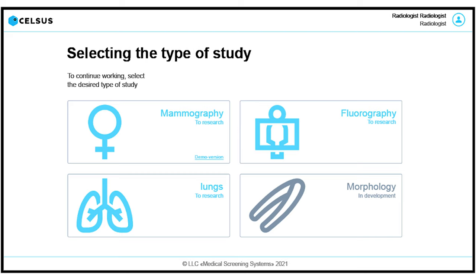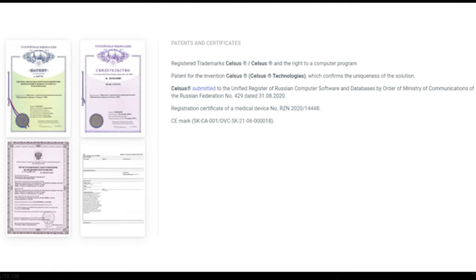Celsus already has ready-made integrations with many major manufacturers of PACS and RIS systems. The processing time of one X-ray or fluorography study is less than eight seconds, and batch processing is supported. Celsus has already received a medical device registration certificate and a CE mark.